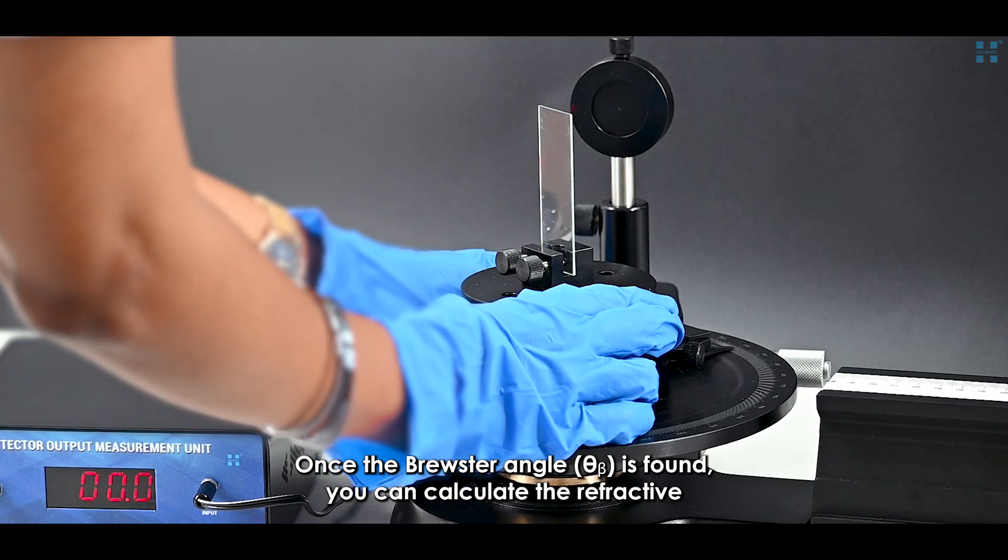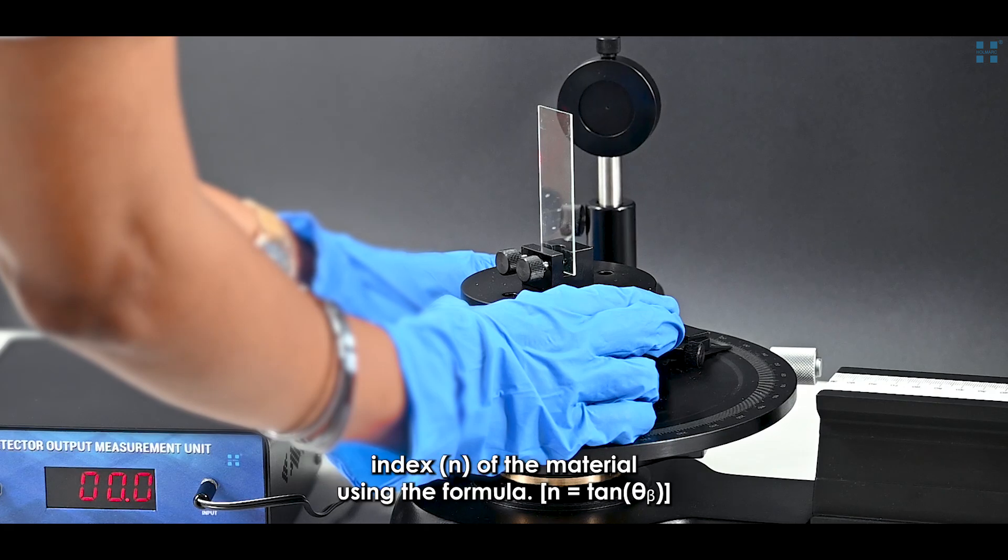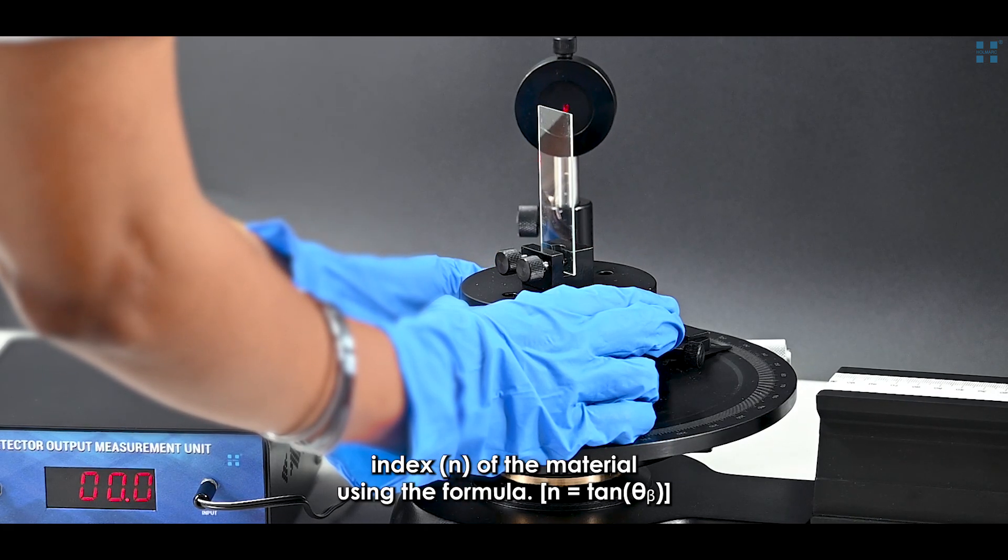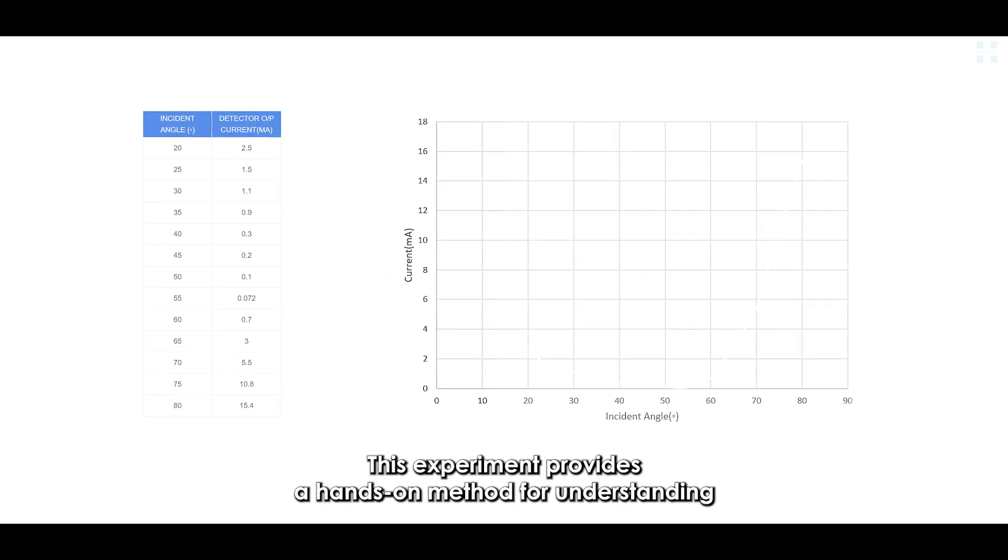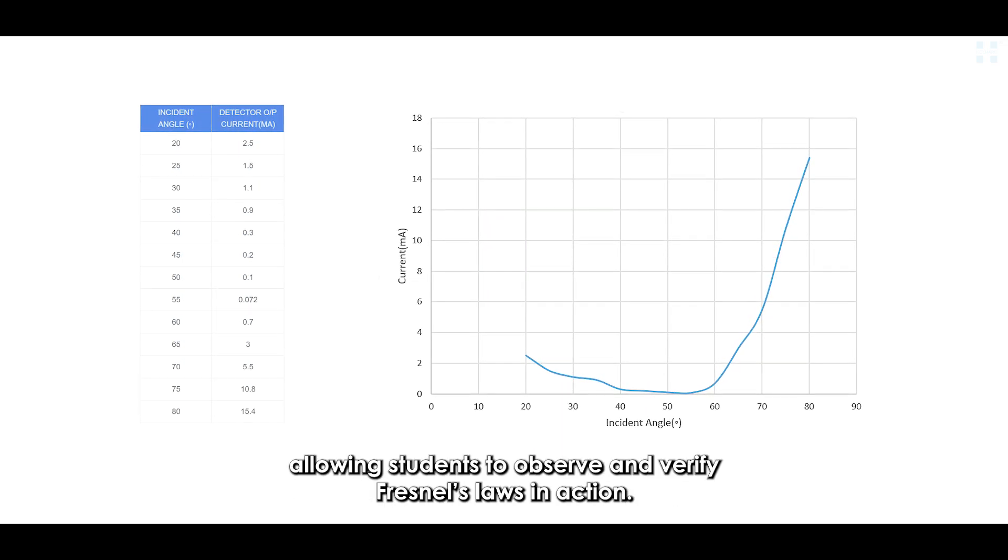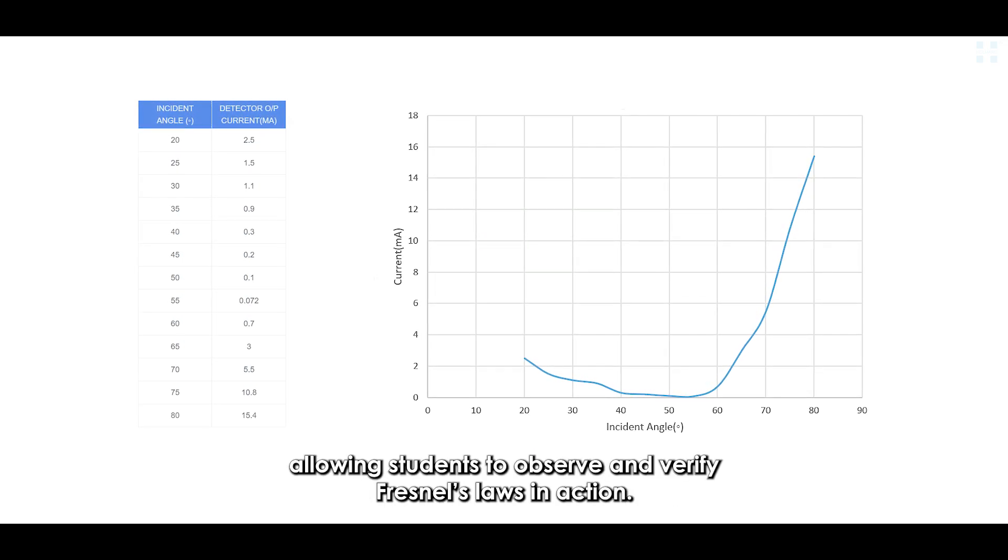Once the Brewster Angle is found, you can calculate the refractive index of the material using the formula. This experiment provides a hands-on method for understanding light polarization and reflection, allowing students to observe and verify Fresnel's laws in action.